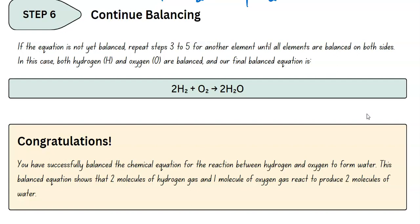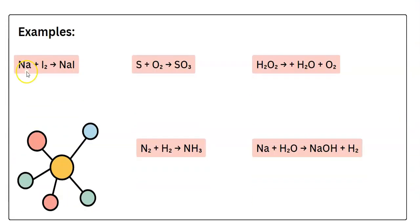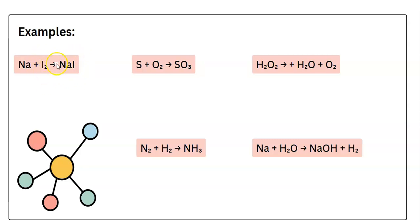If it's not balanced, go back and continue to count atoms and change coefficients. Let's try some other examples. Here we have sodium plus iodine. Notice that sodium doesn't have a two — it's not part of HOFBrINCl, but iodine is. But when they're combined, sodium iodide produces the chemical formula NaI, not NaI₂. Let's focus on balancing this: we only have one iodine in our products, whereas we have two in our reactants. So we're going to put a two in front of NaI. But that leads to having two sodiums in our products but only one in our reactants, so we can fix that by writing a two in front of Na. And now the equation is balanced.